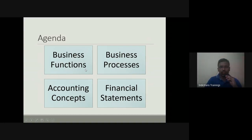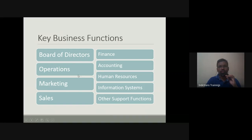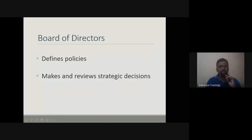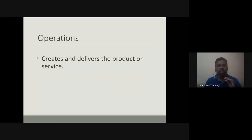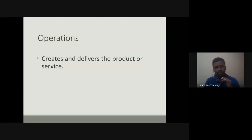In the last session we looked at business functions and business processes. Today we look at accounting concepts and financial statements. We got clarified about what each function does - what the board of directors or executive management does, what operations lines do. Operations is industry-specific: it could be called production or manufacturing in a manufacturing industry, core banking in banking, software delivery in IT services, or hospital management in healthcare.